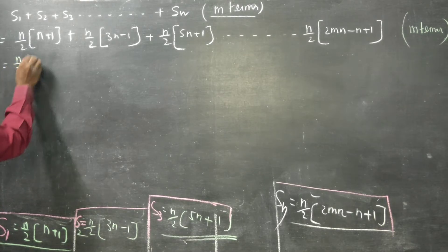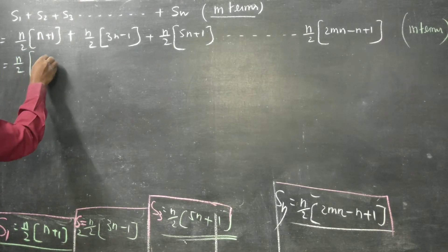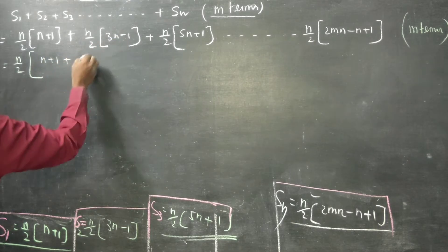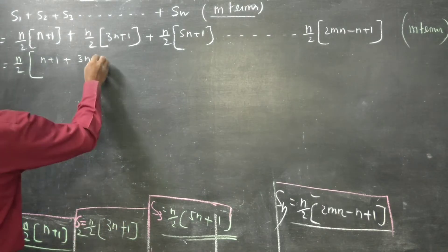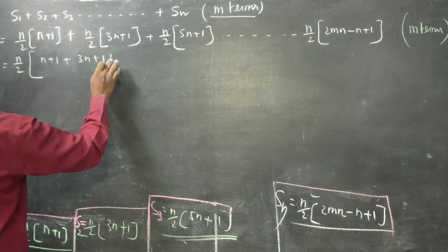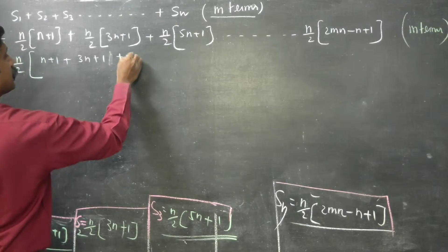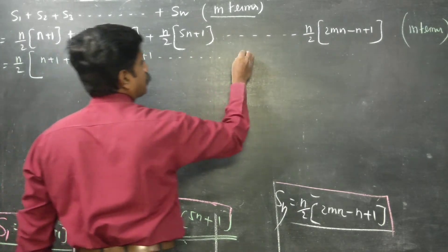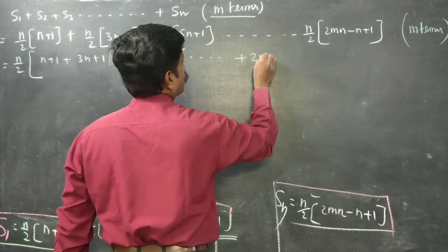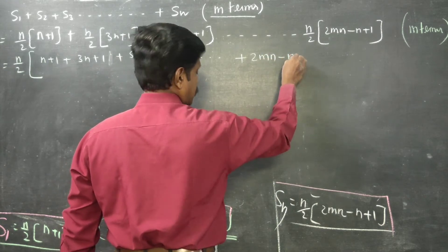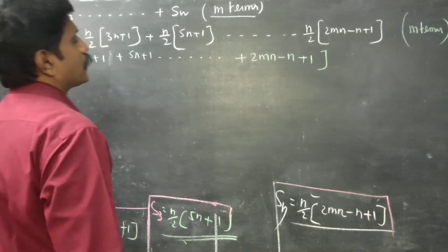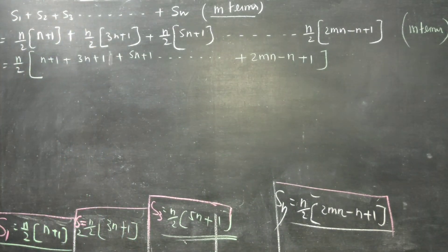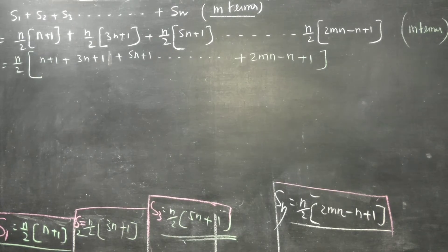Taking n by 2 as common: we get n plus 1, then 3n plus 1, then 5n plus 1, dot dot dot, up to 2mn minus n plus 1. The last stage is minus n plus 1.